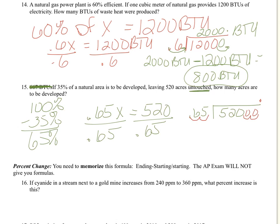So 65 goes into 520 eight times evenly, and then we fill in our zeros. So the AP test does not allow calculators, but the numbers are going to come out nice and even. So 800 acres is our original amount of land. We need to subtract 520 that were untouched and left as natural. So our developed area is 280 acres.